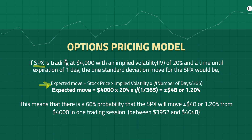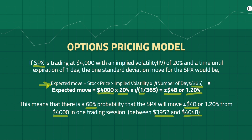We're looking at the SPX for zero DTE, assuming it is trading at 4,000 with an implied volatility of 20 percent. We use the value of 1 for the time input — although it is zero DTE, we are calculating the expected move for one trading session, so we must use 1. You can simply change this value if your time horizon is different. Plugging this in, we get a plus or minus 48 point move, or a 1.2 percent move for that day. This means there is a 68 percent probability that the SPX will move plus or minus 48 points from 4,000 in one trading session, so between 3,952 and 4,048. If you wish to use trading days instead of calendar days, change the denominator from 365 to 252, as there are 252 trading days in a year — both calculations result in virtually the same number.